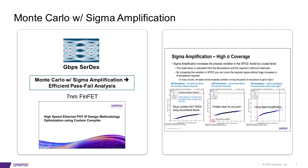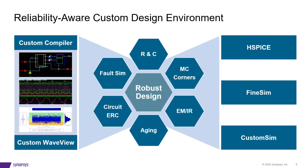Here is another example of multi-corner analysis with sigma amplification applied in a design of a high-speed Ethernet PHY IP using Custom Compiler, where the process variation coverage has been increased by a scaling factor without huge increases in the number of simulations required. Thank you.